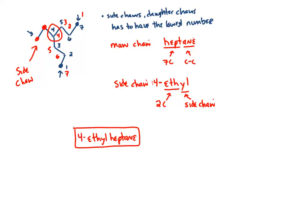Each part of that name has significance: the 4 tells us the location of the side chain, eth tells us the length of the side chain, yl tells us it's a side chain, hept tells us the length of the main chain, and the A-N-E tells us the only thing in this molecule are carbon-carbon single bonds. The idea is that we're always finding the longest chain and then identifying those side chains. Remember, meth-eth-prop is our counting, and the endings like yl and ane are telling us what it is.